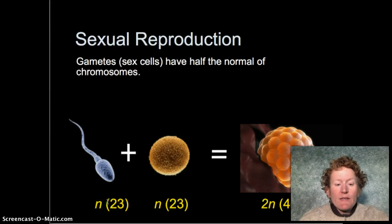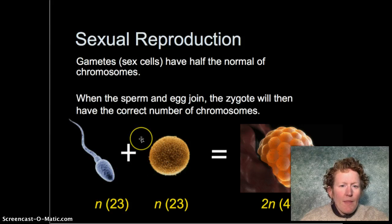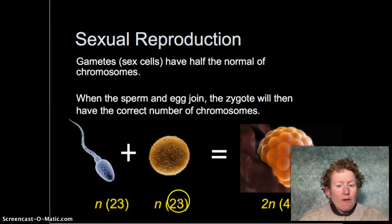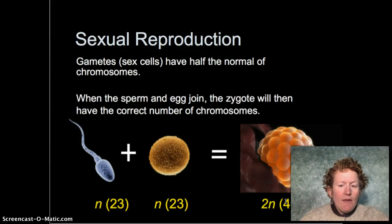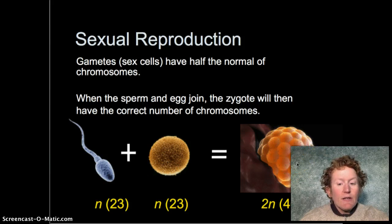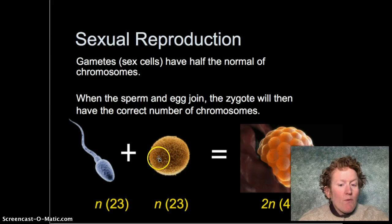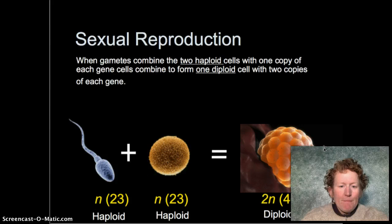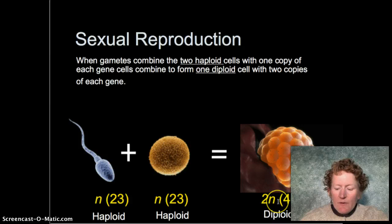Eggs and sperm only have 23 chromosomes, not 46, because they only have one copy of each chromosome. When eggs and sperm join, 23 plus 23 equals 46, which is the normal number for a body cell. This zygote then turns into a bunch of cells and eventually an entire organism. These two cells combine to make one — the first cell of a zygote — and then that cell keeps dividing. So eggs and sperm are haploid, and the zygote is diploid.